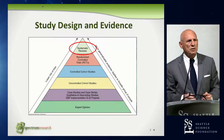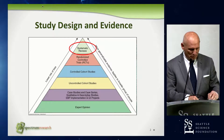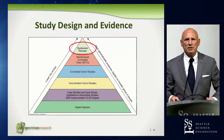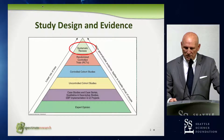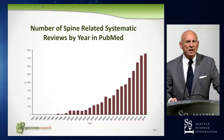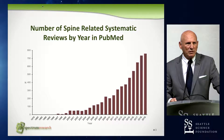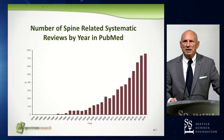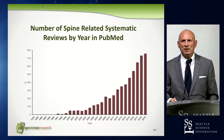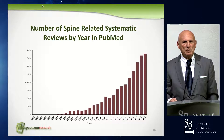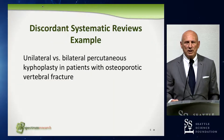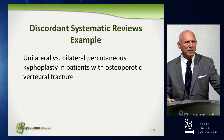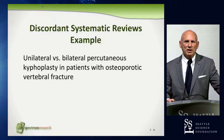Most of you know by now that this is an evidence pyramid, and that systematic reviews are at the top of the evidence pyramid. Systematic reviews are believed to provide the strongest quality of evidence. The number of systematic reviews published in PubMed has been increasing over the last 20-plus years, and you can just see that the numbers are increasing.